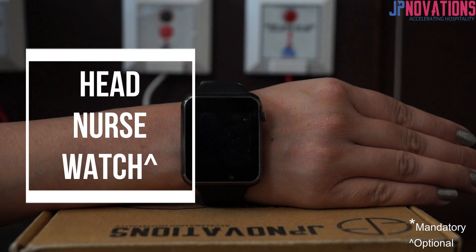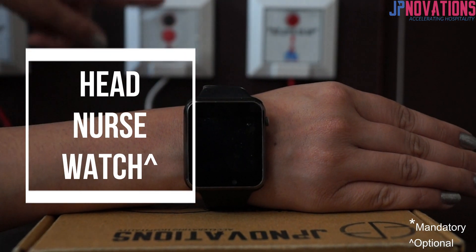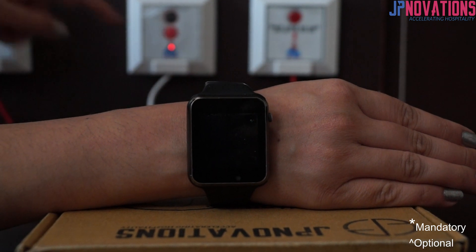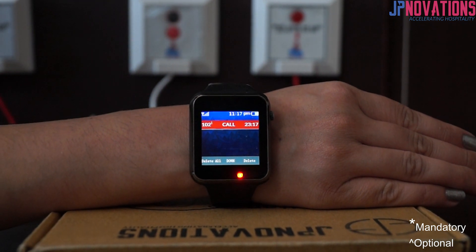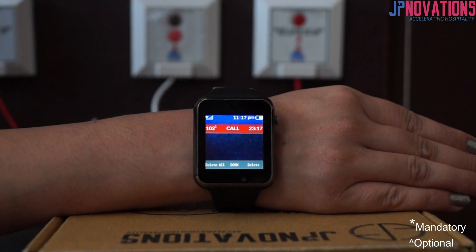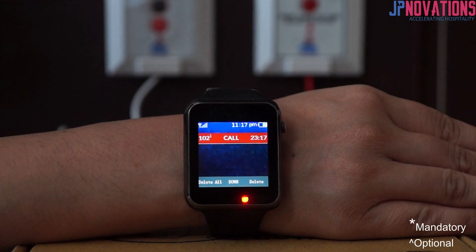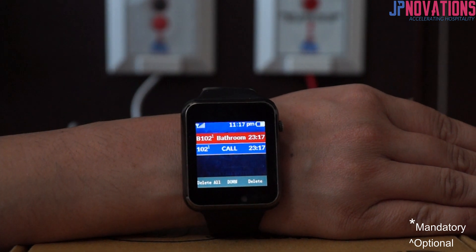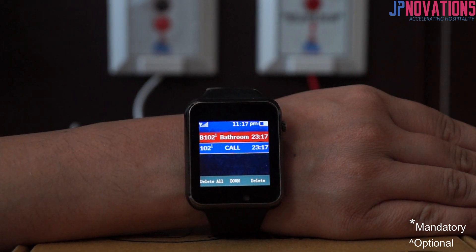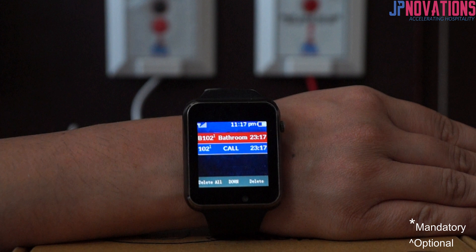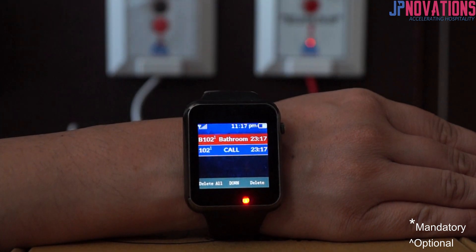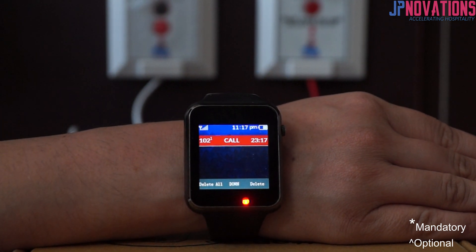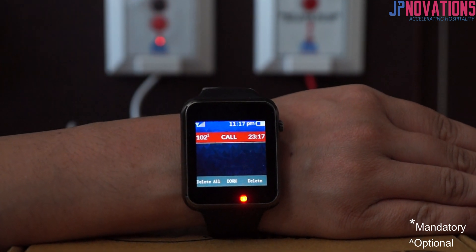Sever watch is an optional component in the system. In general it's given to head nurse for keeping an eye on the ongoing calls. Watch vibrates and beeps on receiving a new call. Also watch has a notification indicator to indicate pending calls. It displays all the ongoing calls, and on attending the calls by the staff the call is removed from the watch so head nurse can know there is no pending calls.